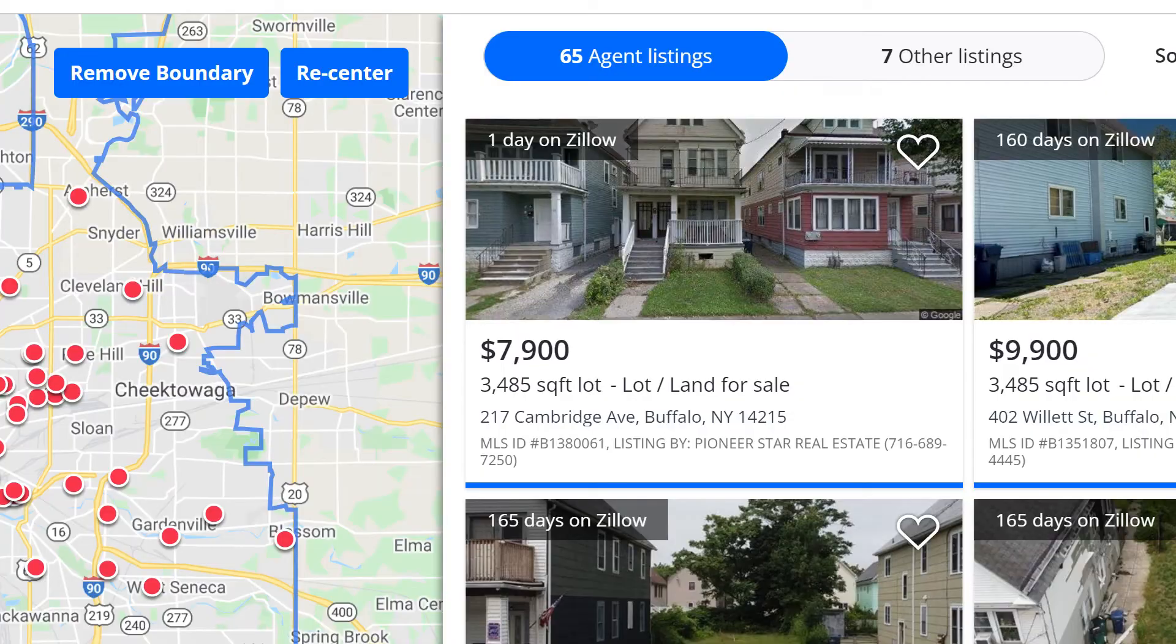If we hop over to Zillow, by the way, fuck you Zillow, I still hate you. We can see that the lowest priced land there is $7,900 for 3,500 square feet, or $2.27 per square foot.